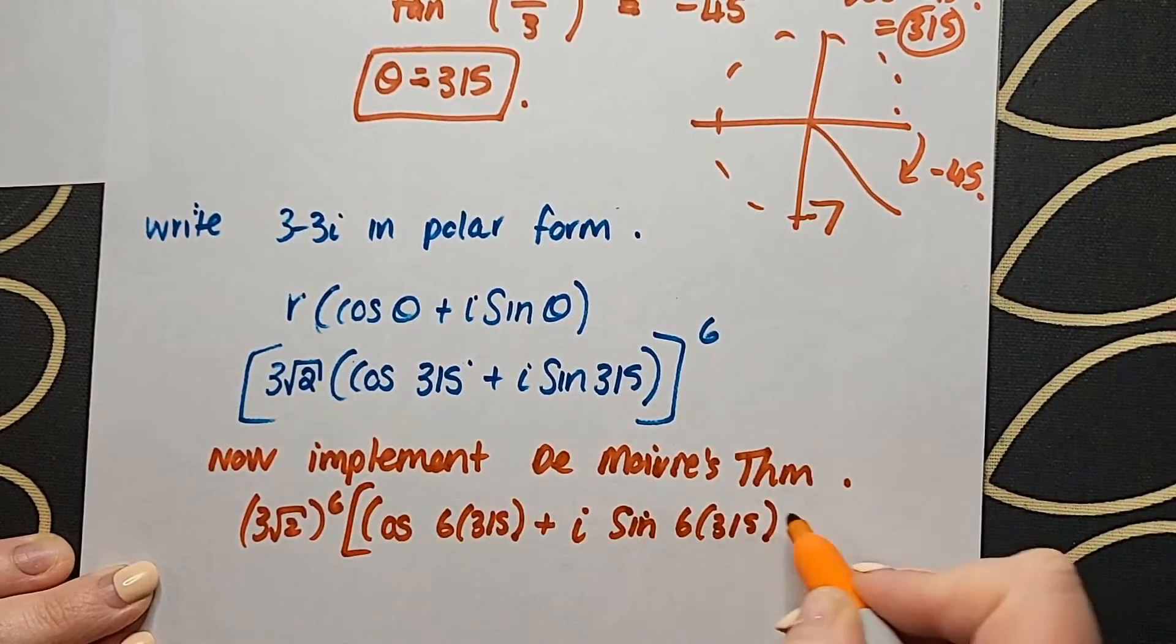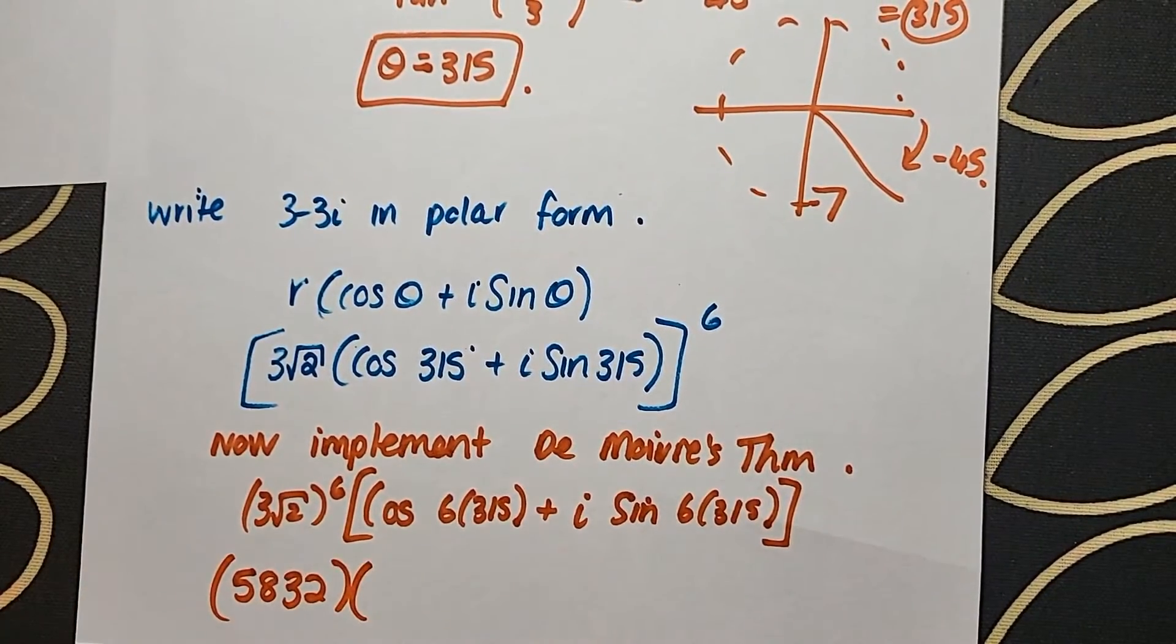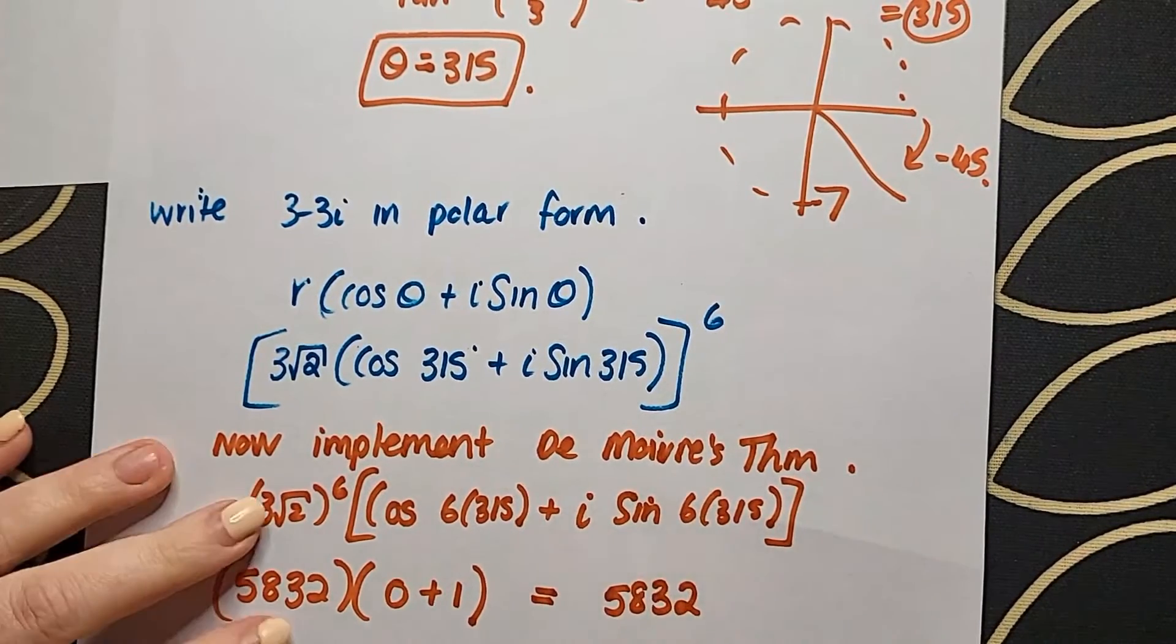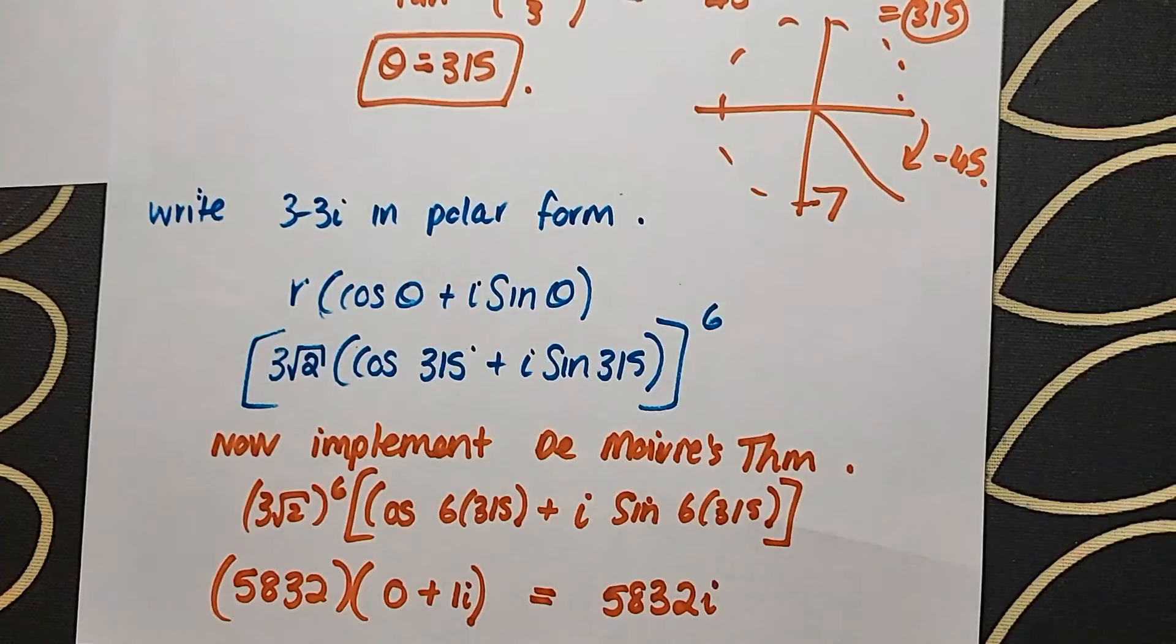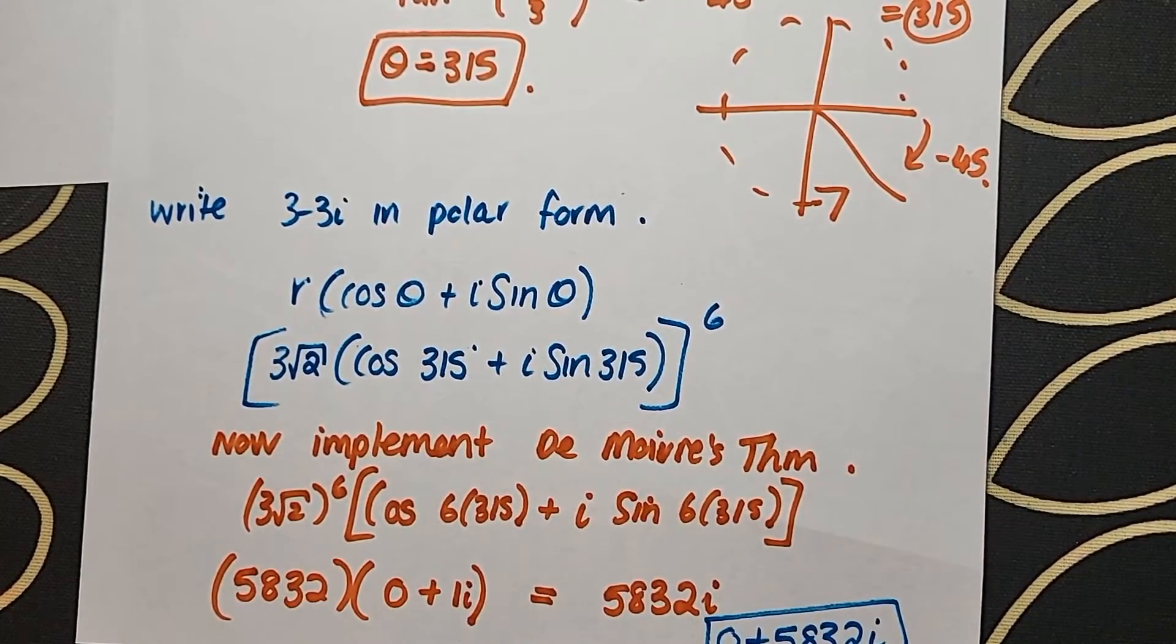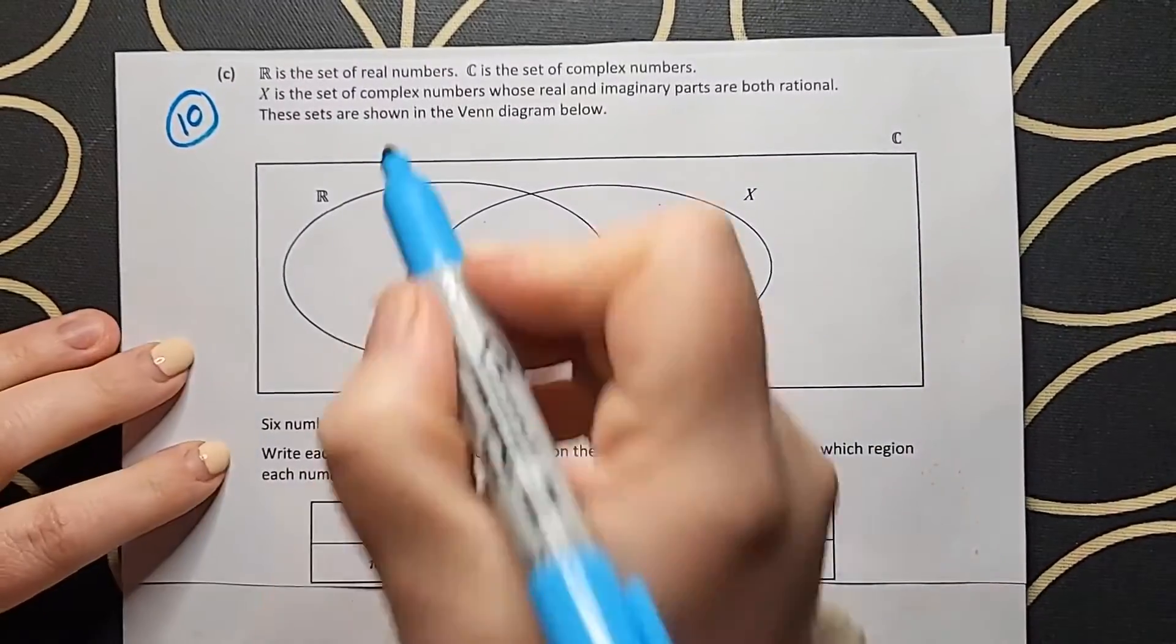Remember when we are doing De Moivre's theorem and we implement the power of 6, it is just going to give us back a standard complex number answer. When we multiply this out we get 5,832i, but to write it as a standard complex number I put it down as 0 plus 5,832i.